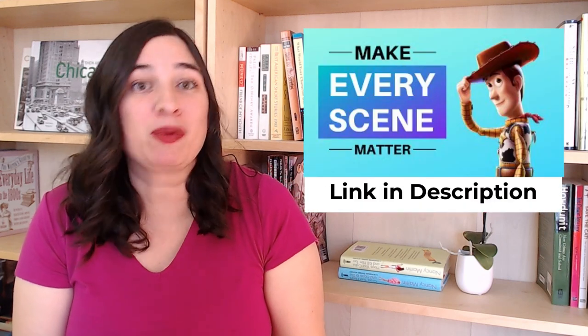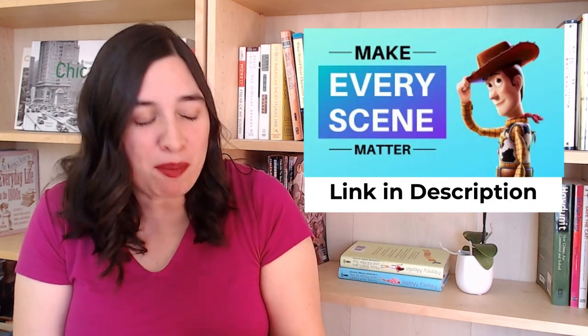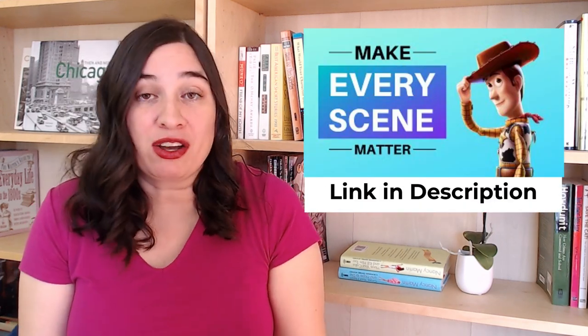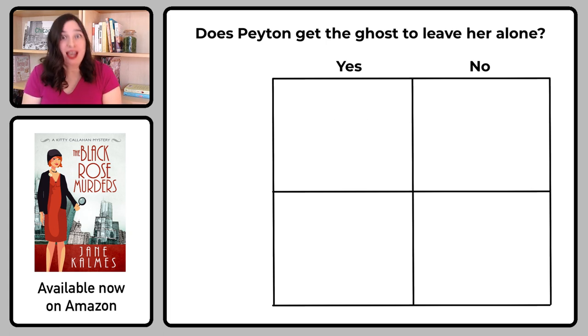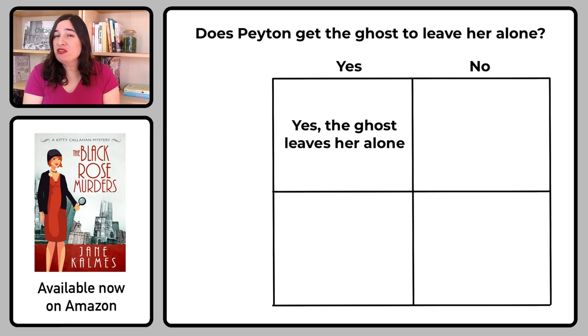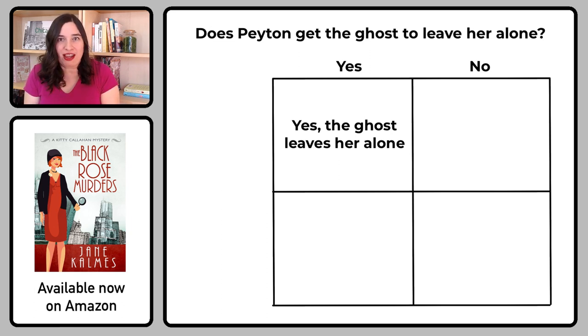I did a whole video on this, which I'll link down below, but let's look at the four possible answers and ask, what's wrong with yes or no? What's wrong with yes is that it is simply too easy. Peyton gets what she wants, the plot moves ahead, and it all feels just a little linear, unsurprising, unsatisfying. We don't feel like she's really having to work very hard.